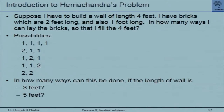Let me go over to the Hemchandra problem. Suppose I want to build a wall of length four feet. I have two kinds of bricks: one longer brick which is two feet long and another shorter brick which is one foot long. In how many ways can I lay the bricks to fill four feet? The possibilities are: four bricks of one foot each; one brick of two feet and two bricks of one foot in various arrangements; one one two; and two two. There are five different ways.